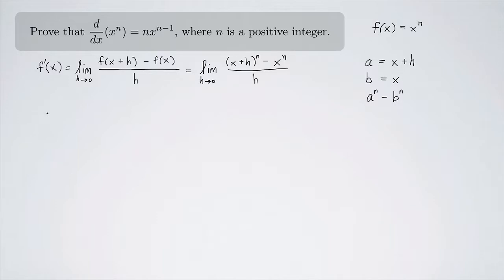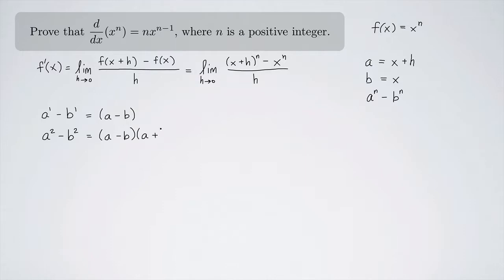Let's look at a to the first power minus b to the first power — that's just a minus b. How about a squared minus b squared? That's the difference of two squares: a minus b times a plus b. How about a cubed minus b cubed? That's the difference of two cubes: a minus b times a squared plus ab plus b squared.